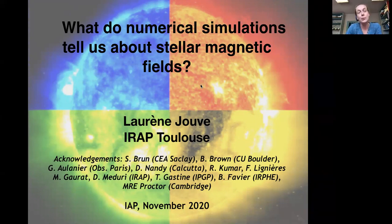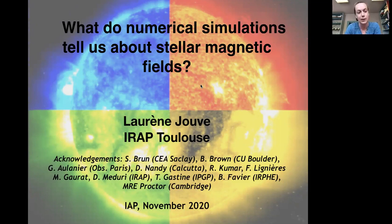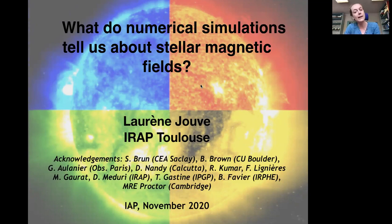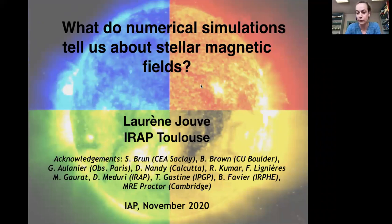I will try to talk a little bit about stars which are more or less similar to the sun — cool stars on the main sequence where the mechanisms are more or less the same as what happens in the sun — and also about more massive stars where the magnetic field as observed is completely different from what we get in the sun and on cool stars.